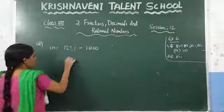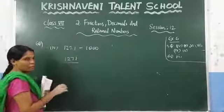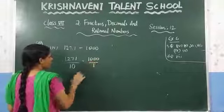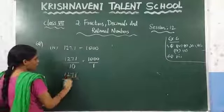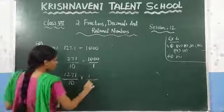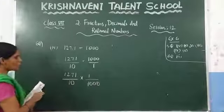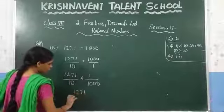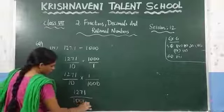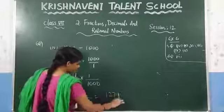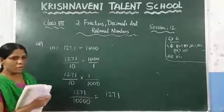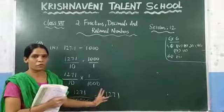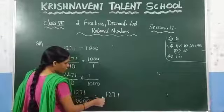Write 127.1 as 1271 by 10, since after the decimal point one number is there. Then divide by 1000, written as 1000 by 1. Change division into multiplication — write the reciprocal: 1 by 1000. Multiply the numerators: 1271 into 1 gives 1271. Multiply the denominators: 10 into 1000 gives 10000. In the denominator there are 4 zeros, so from the right count 4 numbers and before that keep the decimal point.